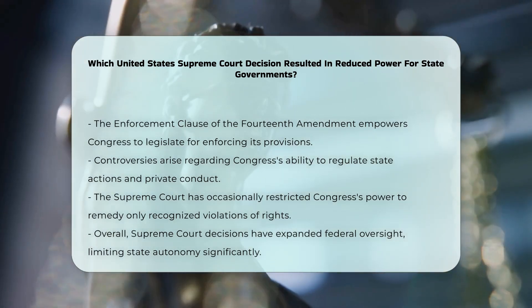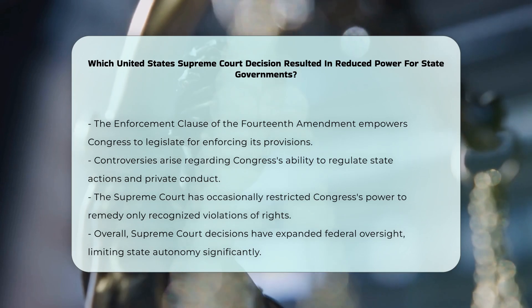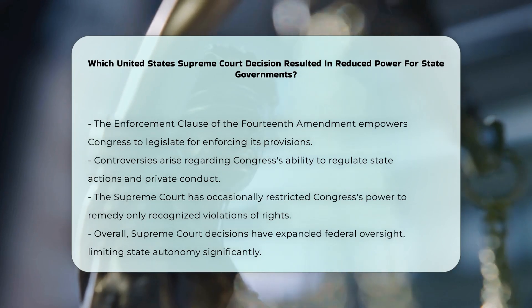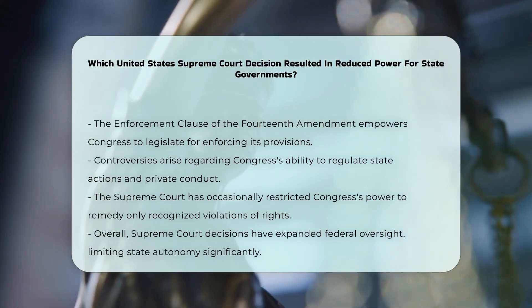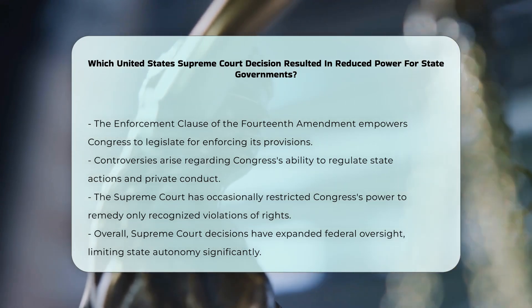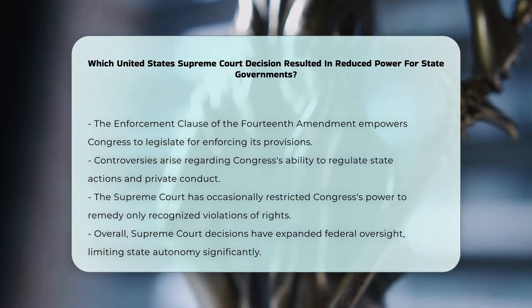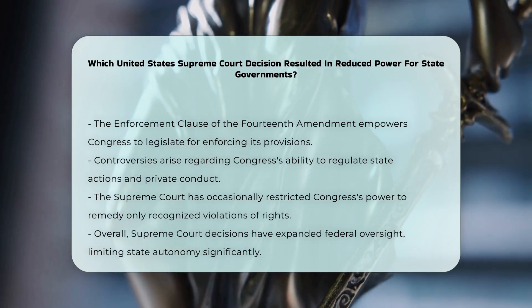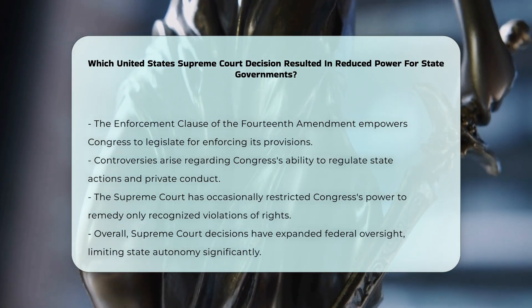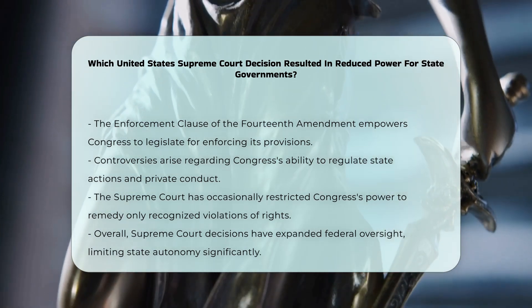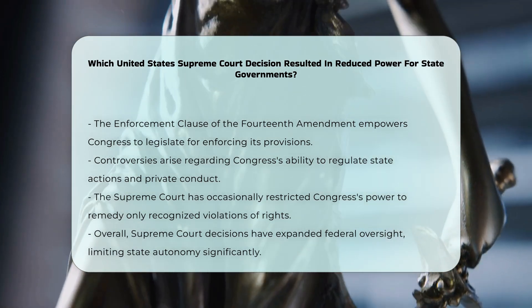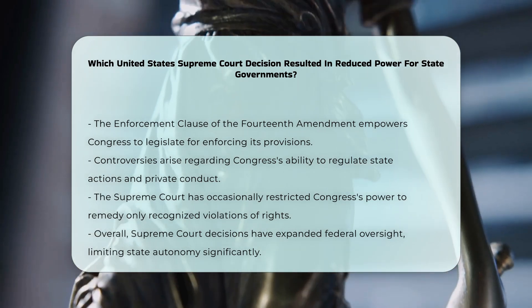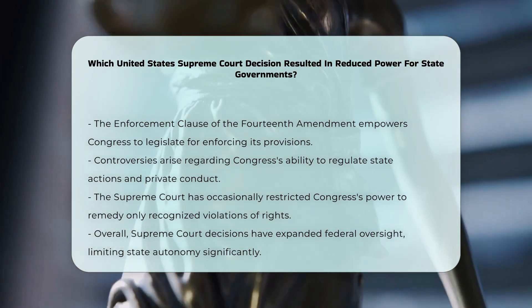In summary, several Supreme Court decisions have reduced the power of state governments by expanding federal oversight and limiting state autonomy, particularly through the incorporation of the Bill of Rights and the enforcement of the Fourteenth Amendment.